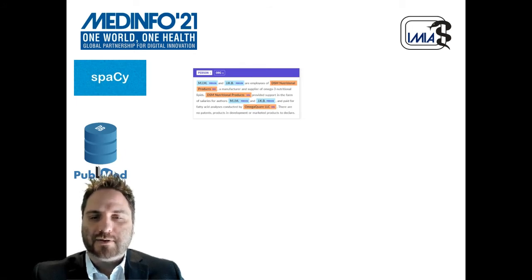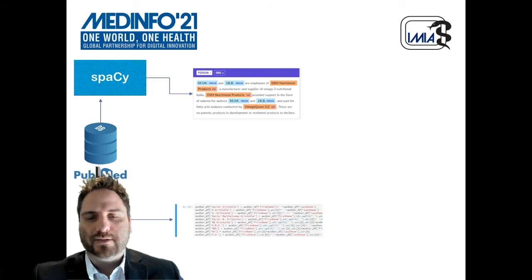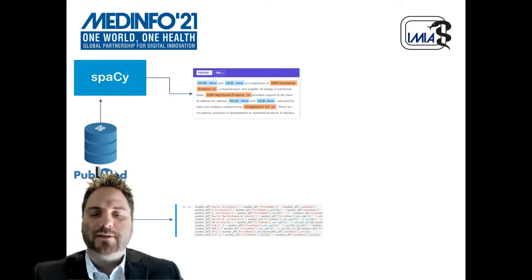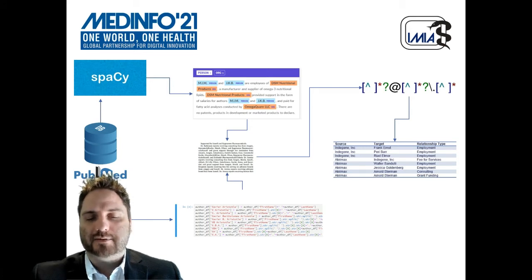Specifically, the parser uses a custom-trained named entity recognition model to identify pharmaceutical companies and combines that data with author permutations drawn from PubMed article metadata. When company-author pairings are identified, the parser then checks a relationship type dictionary to classify the specific COI, and we use the data to aggregate the results for entire scientific areas rather than on an article-by-article basis.